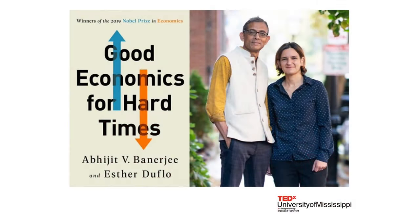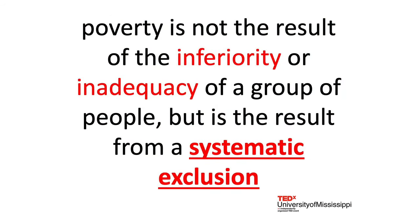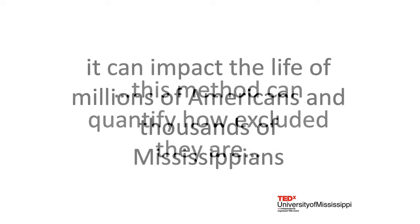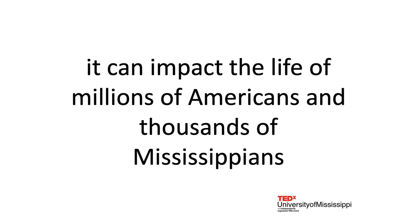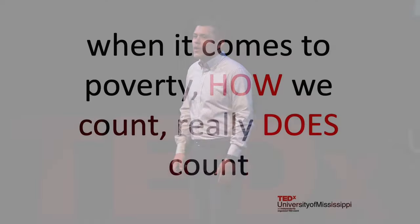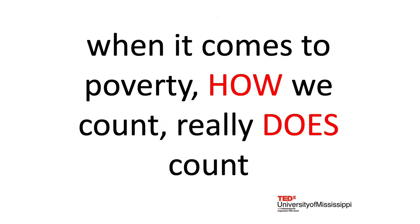The winners of the 2019 Nobel Prize in economics, Abhijit Banerjee and Esther Duflo, concluded in their book Good Economics for Hard Times that poverty is not the result of the inferiority or inadequacy of a group of people, but is the result of a systematic exclusion. And this method can quantify how excluded they are. It can impact the life of millions of Americans and hundreds of thousands of Mississippians that suffer from this condition every day. So when it comes to poverty, how we count really does count.